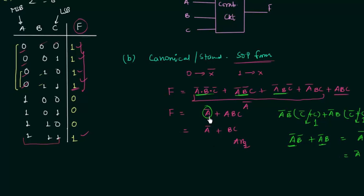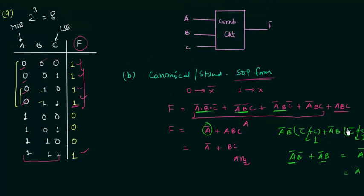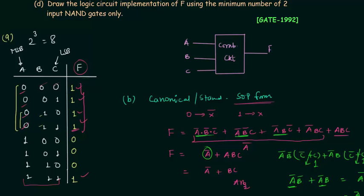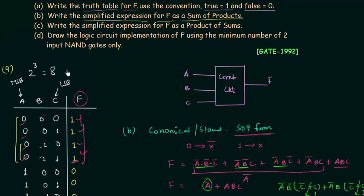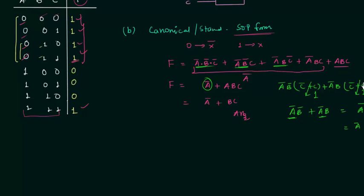Now we move to the C part of the problem where we have to write the simplified expression for F as product of sums. I will first find out the canonical or standard POS form using the truth table, then reduce it using Boolean algebra. In POS form, if a variable equals 0 we write it as x, and if it equals 1 we write it as x complement.